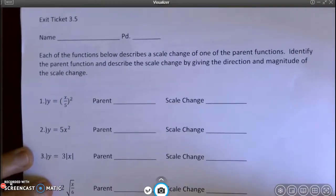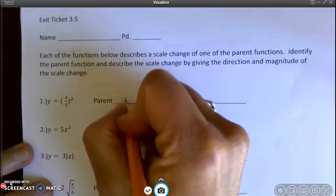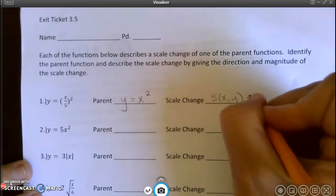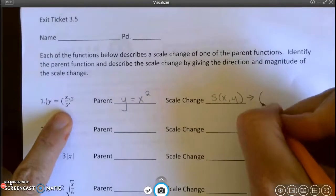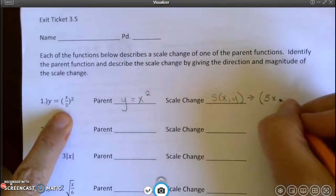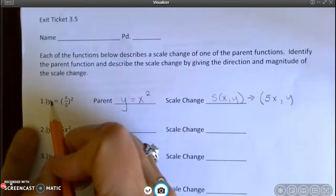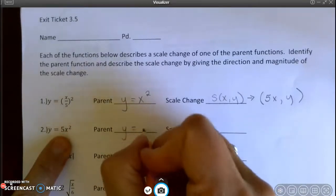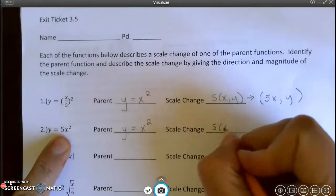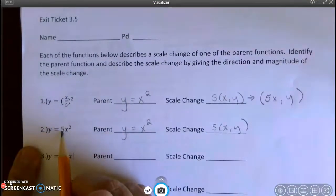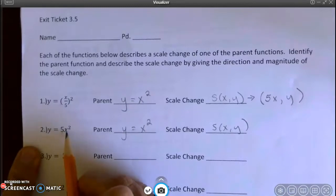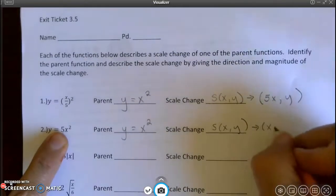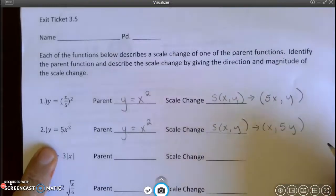So for number 1, my parent function would be y equals x squared. My scale change is going to be x is going to get multiplied by 5 because x lies and nothing happens to the y. So there's no multiplier out in front. For the next one, once again, I have y equals x squared. This time, my scale change, let's see. The 5 is not affecting the x because it's not in parentheses with the x. Therefore, the 5 must be affecting the y. So it's 5 times y because y tells the truth.